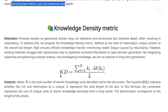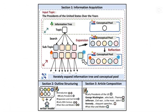Looking at the knowledge density framework, there are three sections. The first is information acquisition: to acquire diverse and comprehensive information, OmniThink emulates the human learning process, progressively deepening its understanding through expansion and reflection methods. This iterative process culminates in the construction of an information tree T, organized to retrieve information in a structured and hierarchical manner with all subtopics and topics. Ultimately, a conceptual pool is formed representing the LLM's current understanding of the topic at any time step M.